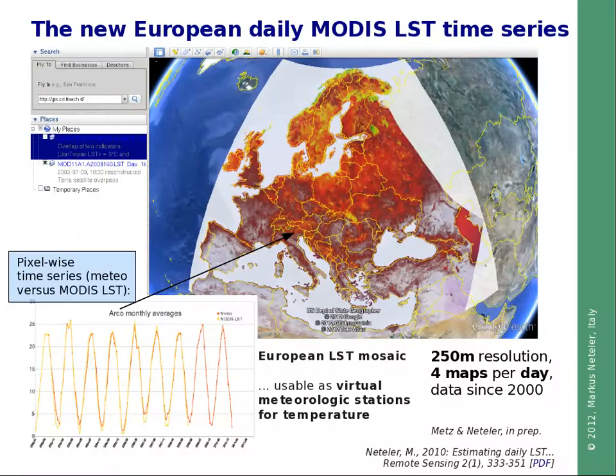These land surface temperature maps form a time series of more than 10 years. When extracting all temperature values in one pixel, one obtains a time series as shown in the diagram. Each pixel can be considered as a virtual meteorological station for near-surface temperature data. Note that a single map out of these almost 14,000 maps contains 415 billion pixels.